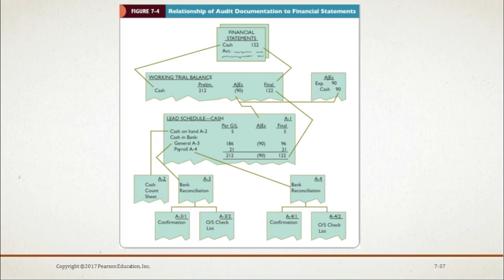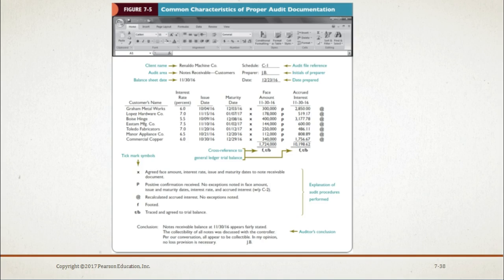Here we have an illustration of the relationship of audit documentation to financial statements, illustrating the adjusting entry of the general cash account for $90,000. Adjusting entries are part of the current file for an audit. You can find Figure 7-4 on page 203 of your textbook. Here we also have an example of a trial balance schedule consisting of the details that make up a year-end balance of a general ledger account — specifically the notes receivable account for Rinaldo Machine Company for the year ending 11-30-2016. You can find Figure 7-5 on page 204 of your textbook.